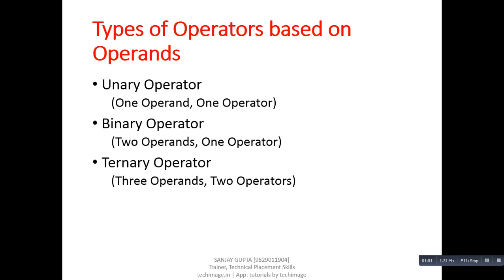Types of operators based on operands. There are total three types of operators available based on operands in this category. The first operator is unary operator. In case of unary operator, there must be one operand and one operator.